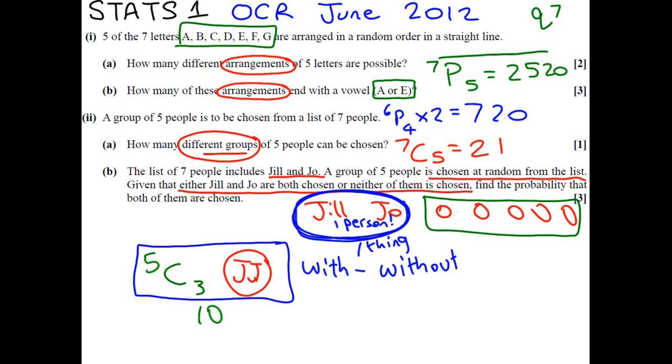then we have to pick these guys. If you really want, it's 5 choose 5. But, come on. There's only one way to pick 5 people from 5 people. Now, we're asked to find the probability that both of them are chosen.